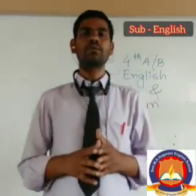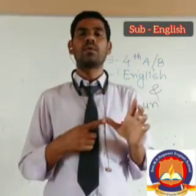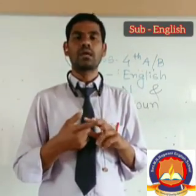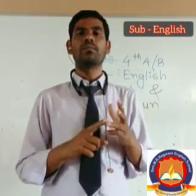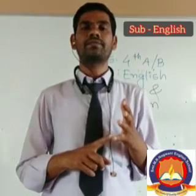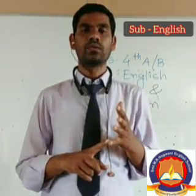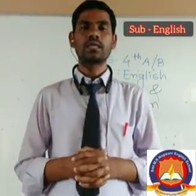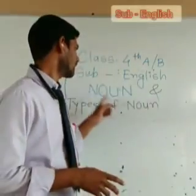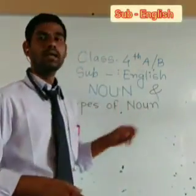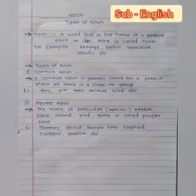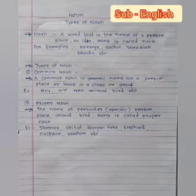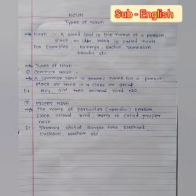There are 5 types of Noun: Common Noun, Proper Noun, Collective Noun, Material Noun, and Abstract Noun. So in this video I am going to share some information regarding Noun and Types of Noun. I have written the definition of Noun as well as some examples of Common Noun and Proper Noun.